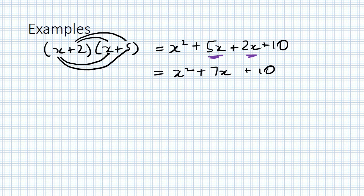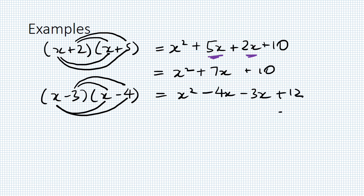Careful here, we don't have any more like terms, so we can't simplify further. Second example: (x - 3)(x - 4). Same process. We've got x², x times -4 is -4x, -3 times x is -3x, -3 times -4 is +12. Remember, a negative times a negative equals a positive. Collecting like terms: x² - 7x + 12.